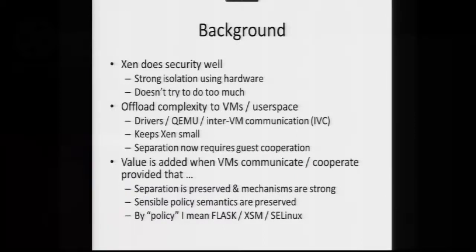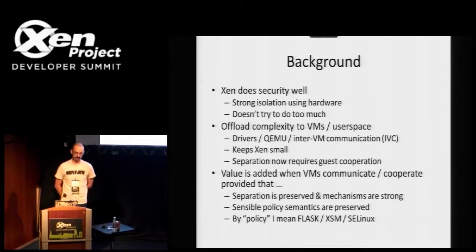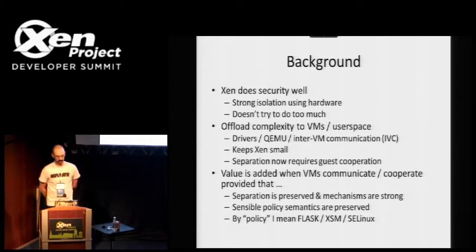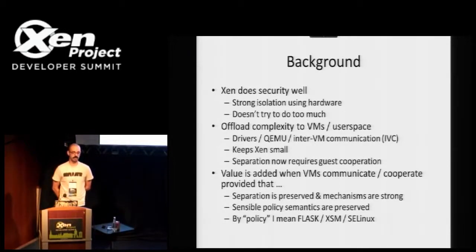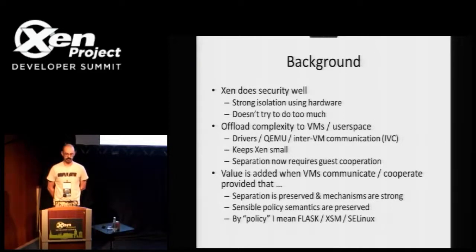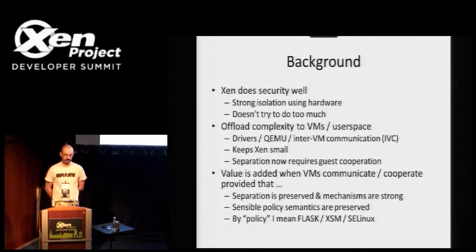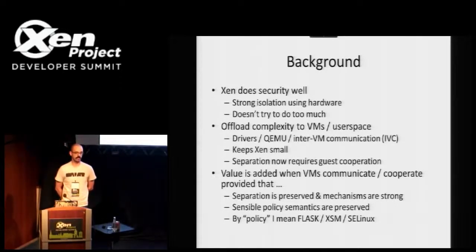I've only been with Citrix for about two years now. I came over to work on a product that ended up being called Xen Client XT — a variant of Xen Client that has some interesting security properties. A lot of these things just come from Xen itself, not necessarily anything specific to XT. They take advantage of the things that Xen does well by default. The strong isolation properties of the hypervisor are very nice, and it doesn't try to do too much — it's very thin, doesn't put a lot of stuff into the hypervisor, and offloads complexity into the virtual machines that support it.